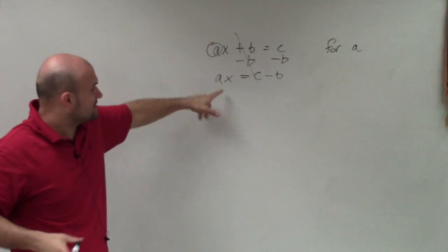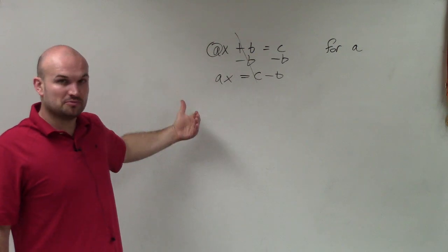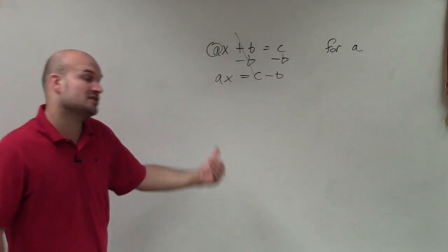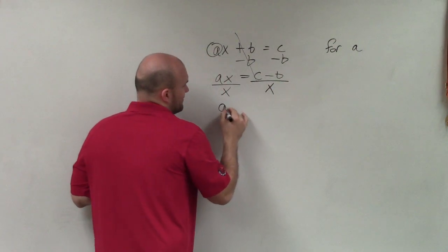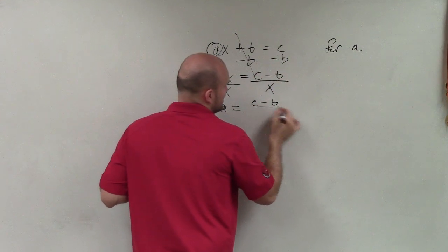Now I need to solve for a, so I need to look at it and say, all right, my a is being multiplied by x, so the inverse operation of multiplying is dividing by x. So therefore, I have a equals c minus b divided by x.